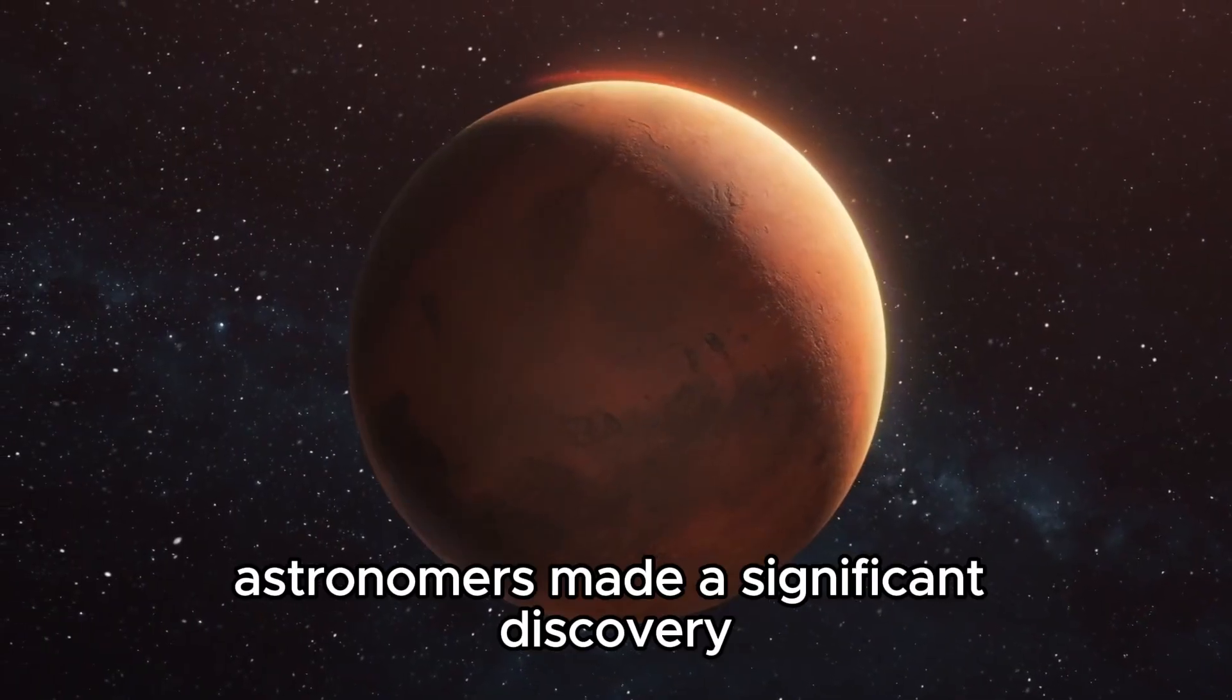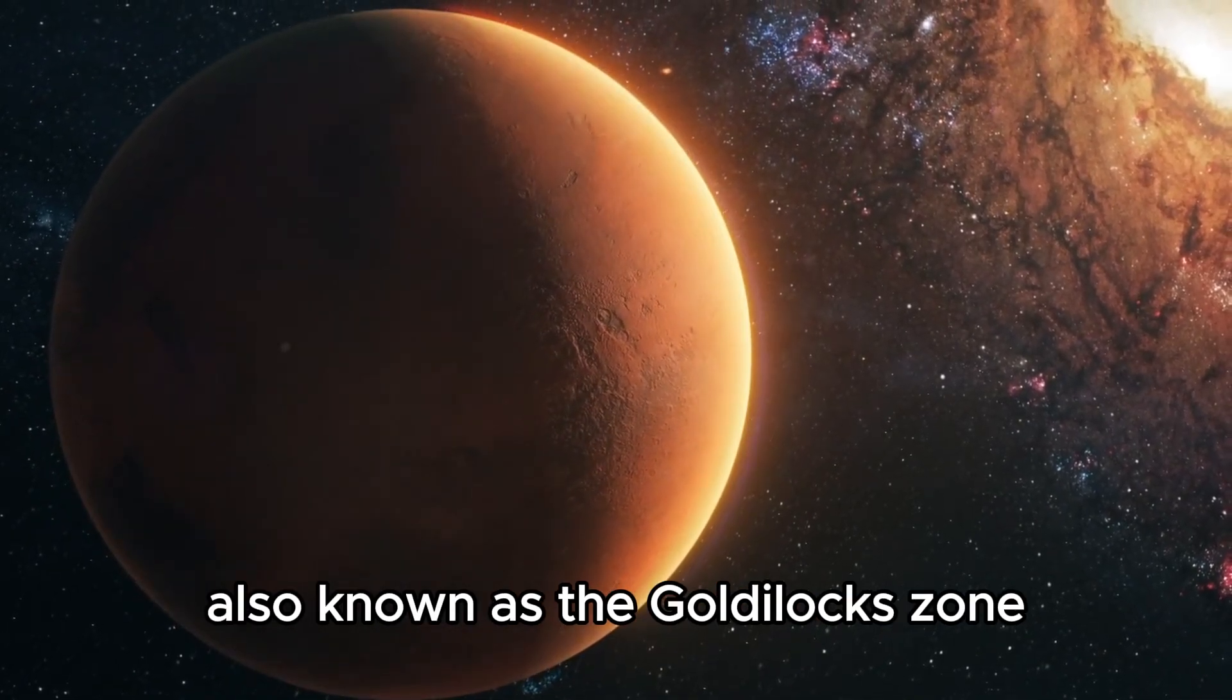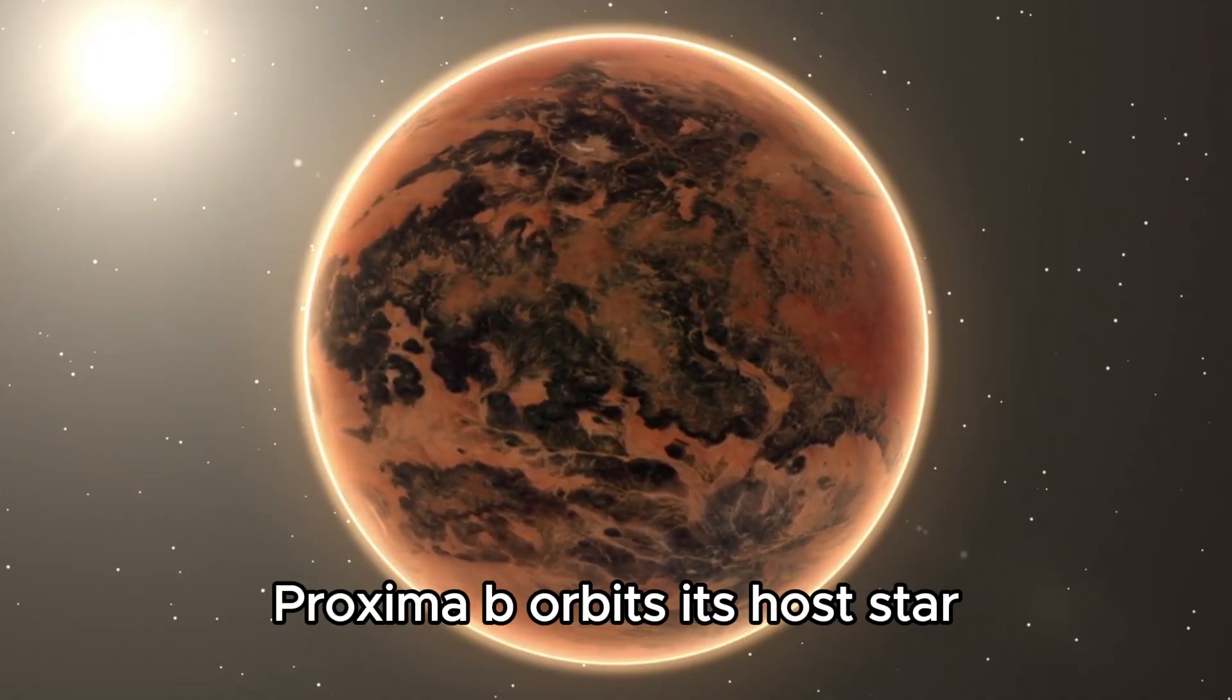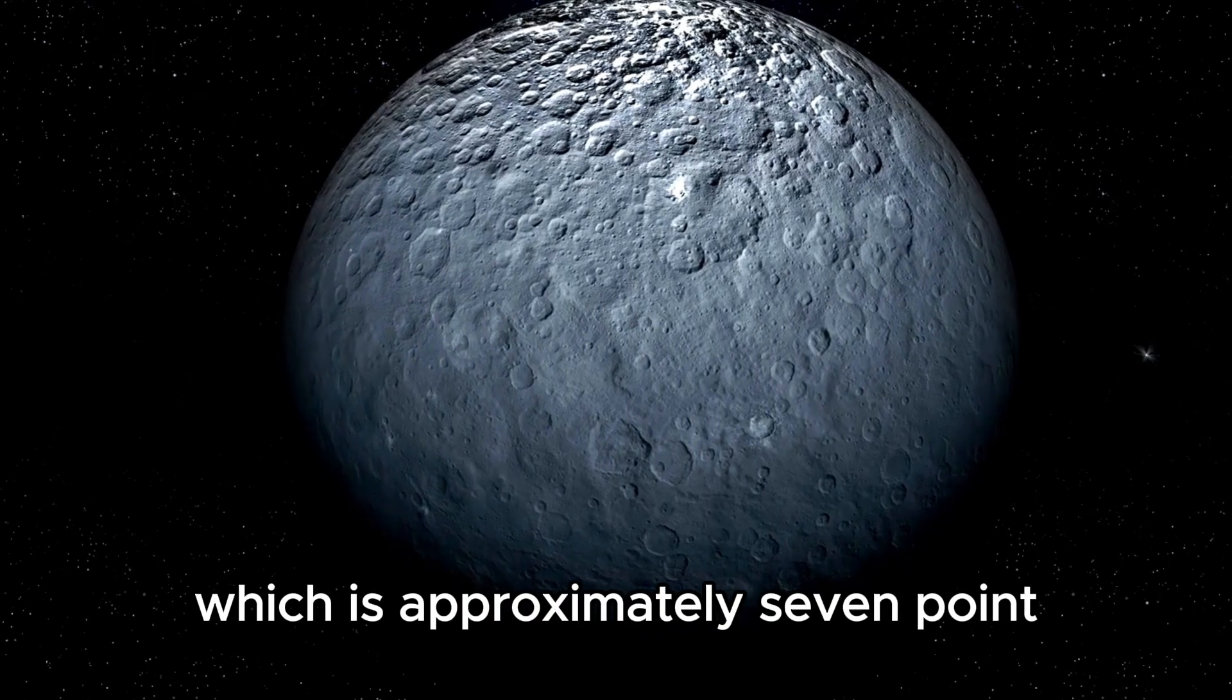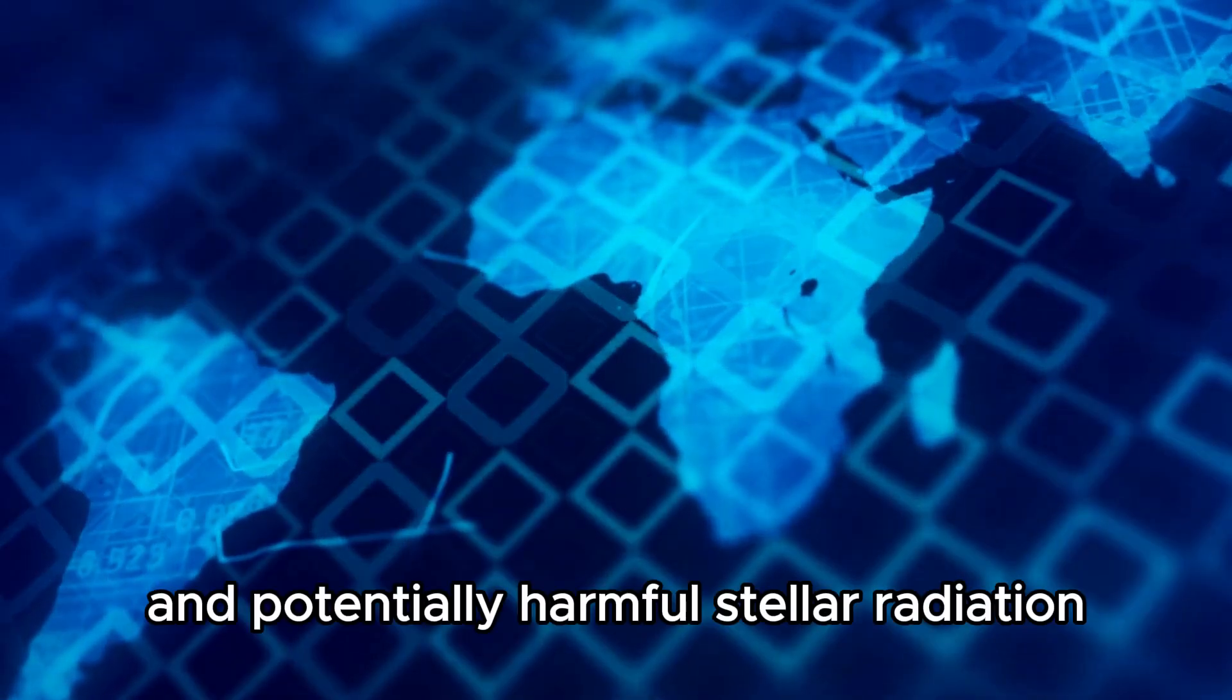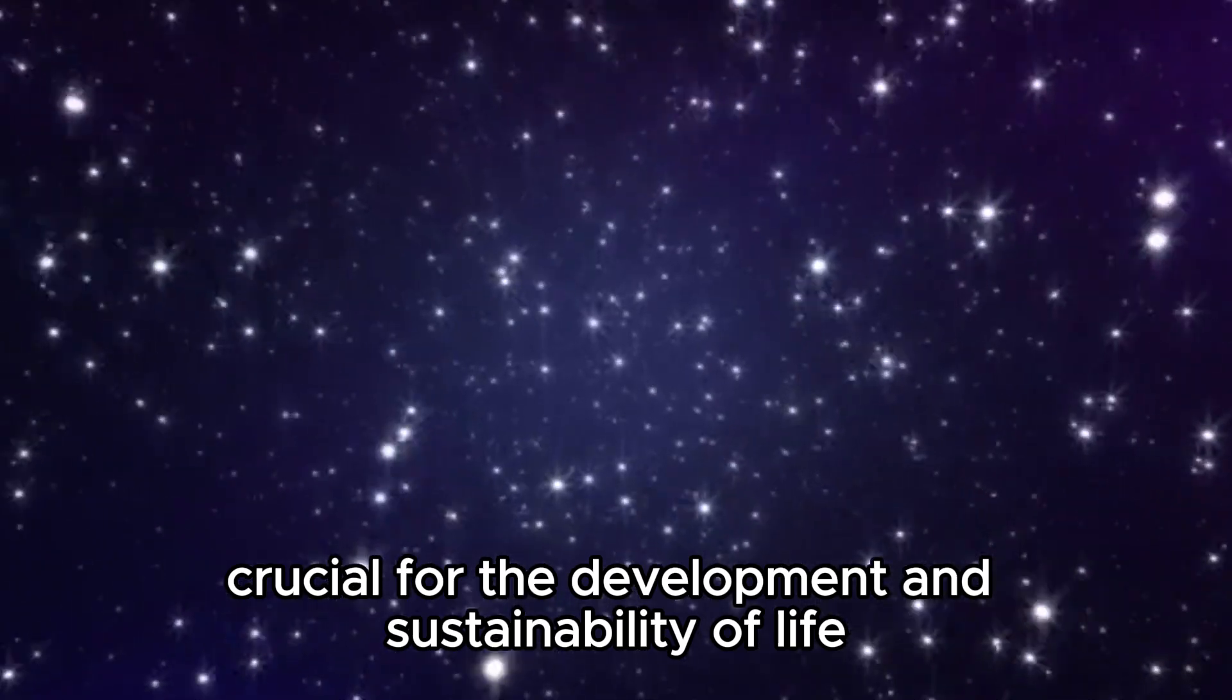In 2016, astronomers made a significant discovery when they detected Proxima B, an exoplanet orbiting within the habitable zone of Proxima Centauri. The habitable zone, also known as the Goldilocks zone, is the region around a star where conditions may be just right for liquid water to exist on a planet's surface, a key ingredient for life as we understand it. Proxima B orbits its host star at a distance of about 0.05 astronomical units, which is approximately 7.5 million kilometers. This distance is much closer than Earth's distance from the Sun, which means Proxima B likely experiences significant tidal forces and potentially harmful stellar radiation from Proxima Centauri. These factors pose challenges to the planet's ability to retain an atmosphere and surface water crucial for the development and sustainability of life.